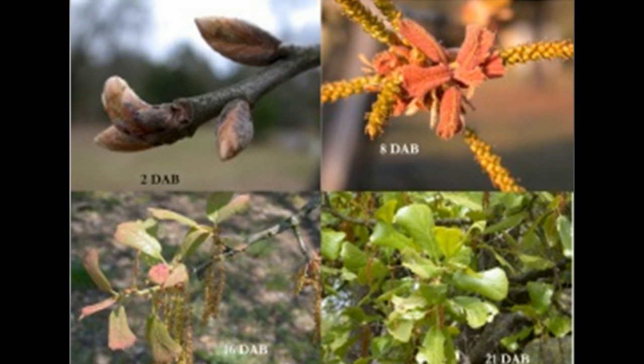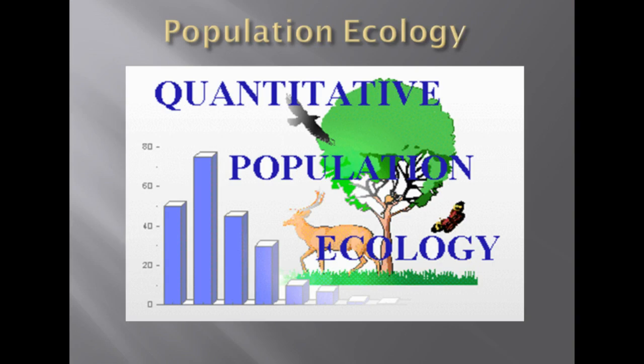Organismal ecologists study how an organism's structure, physiology, and for animals, behavior meet environmental challenges. Population ecologists focus on factors affecting how many individuals of a species live in an area.